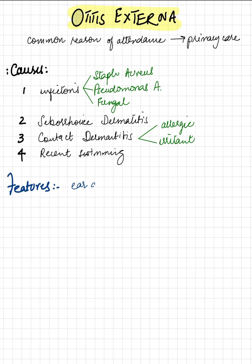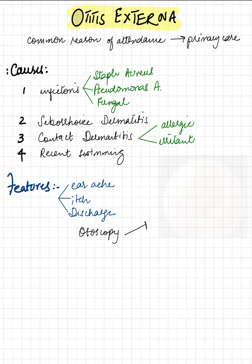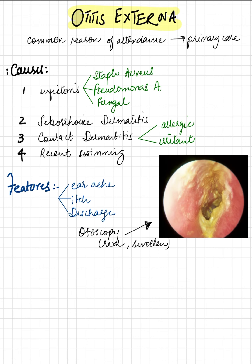Symptomology includes earache, itchiness, and discharge which can be purulent. Otoscopy shows a red, swollen, or eczematous canal with a pus discharge, as shown here.